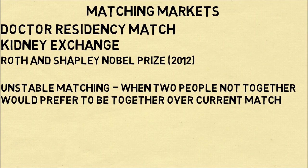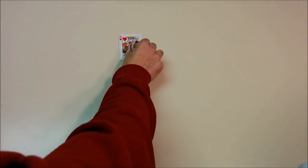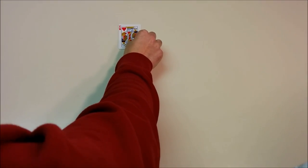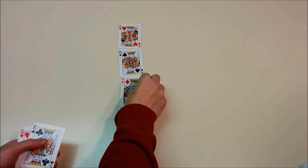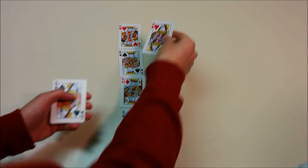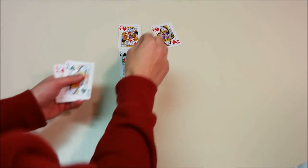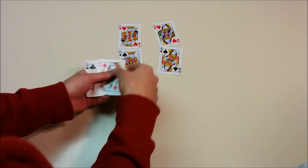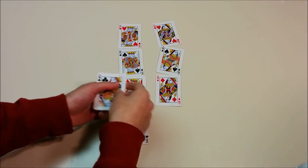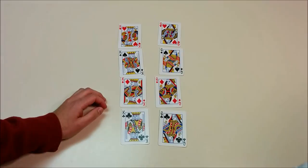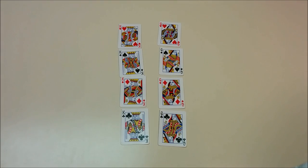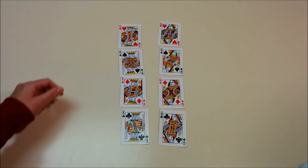We're going to illustrate this with some cards. Imagine we have the four kings — the king of hearts, king of spades, king of diamonds, and king of clubs — and we have four queens: hearts, spades, diamonds, and clubs. So, how would you match up these pairs, the kings and queens?